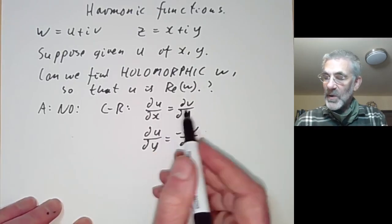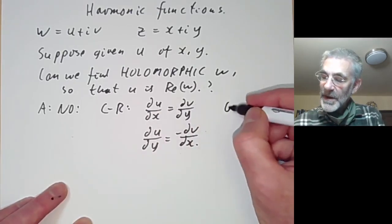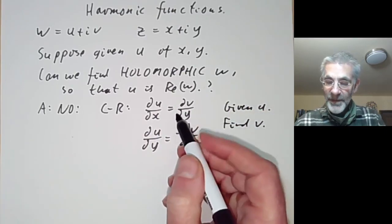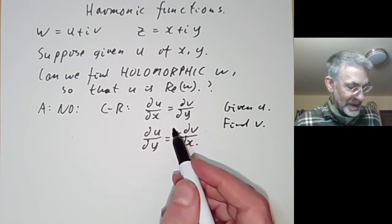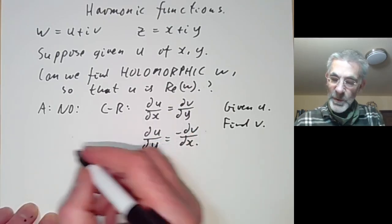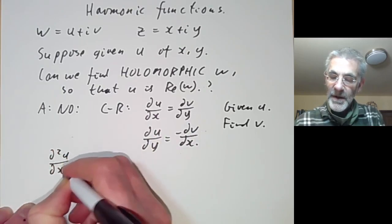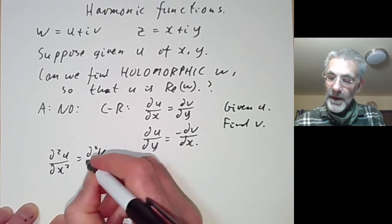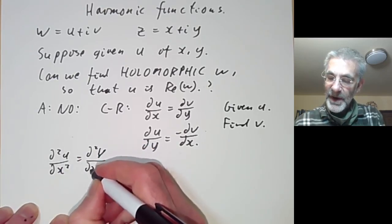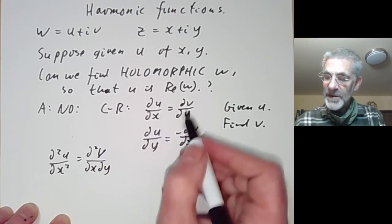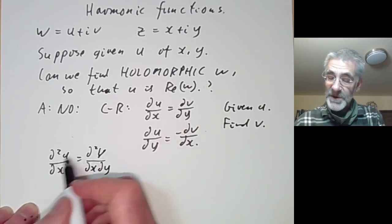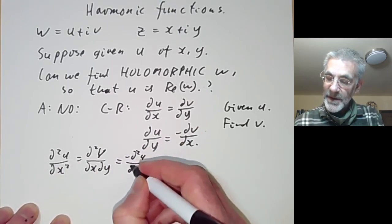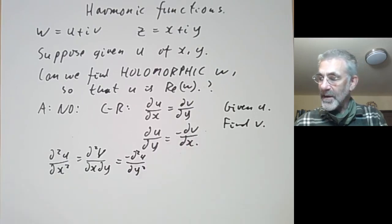What we have to do is, given u, find the function v. But we can't always do this. Let's manipulate these equations. Suppose we take the second derivative of u with respect to x — this equals d²v/dx dy, because if we take the first Cauchy-Riemann equation and differentiate with respect to x, we get this.